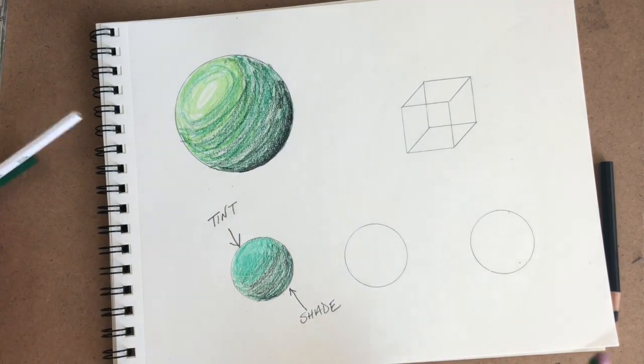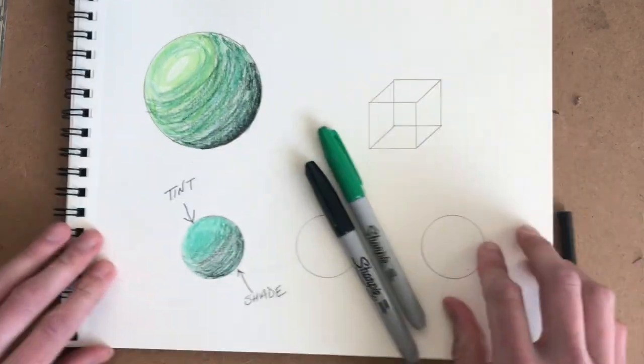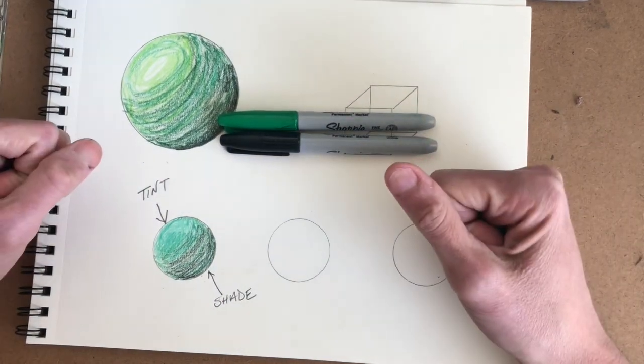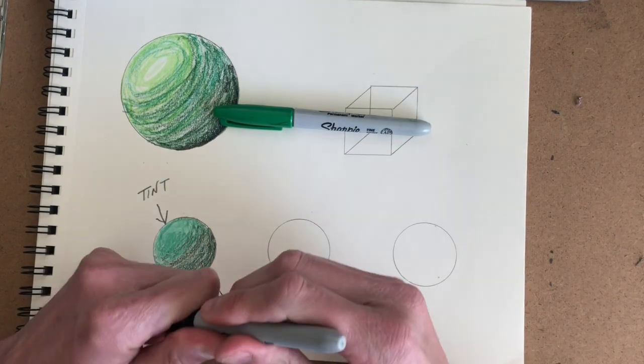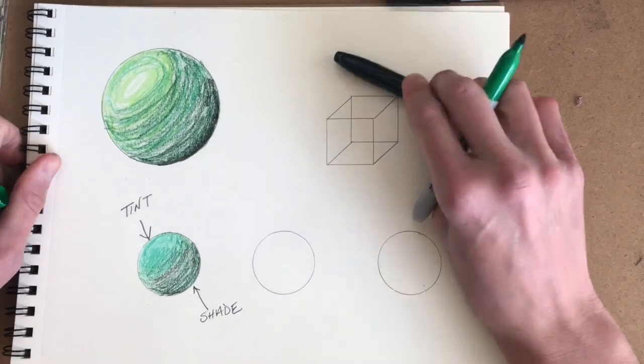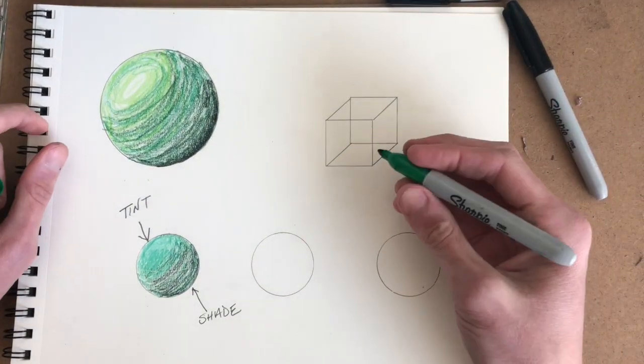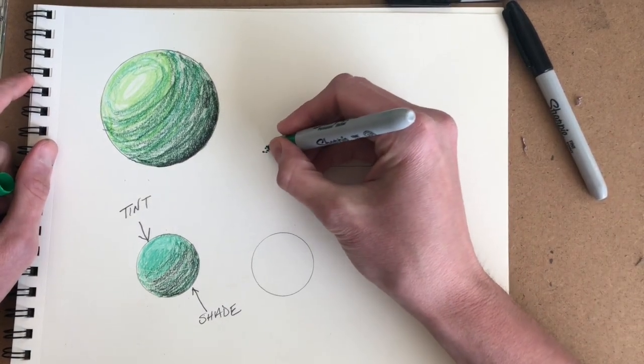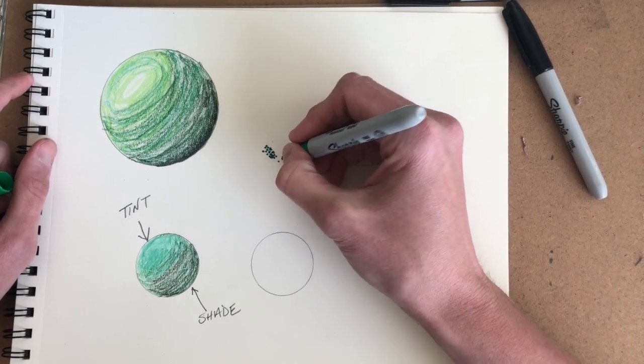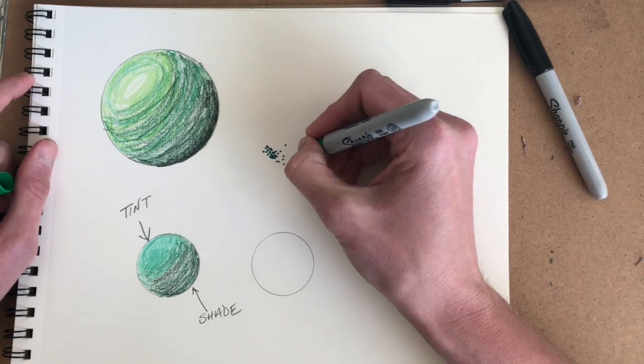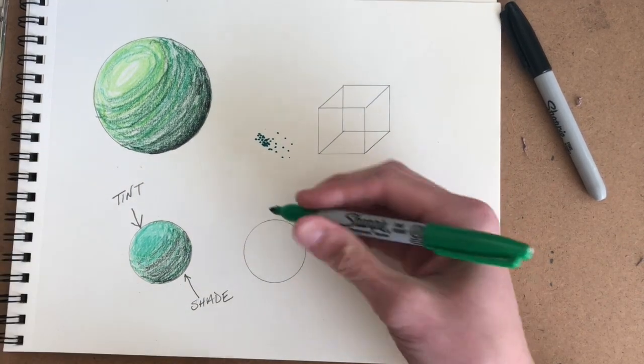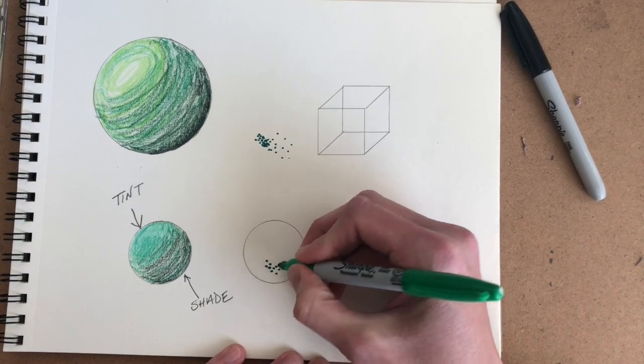Now if all you have are markers, you can still tint and shade by leaving empty areas for white or lighter areas, and then going over with a black marker for your darker areas. And then when you're using markers, we sometimes shade with a strategy called stippling. And stippling is when you make a series of dots, but the lightness and darkness is created by how close or how far apart all your different dots are.